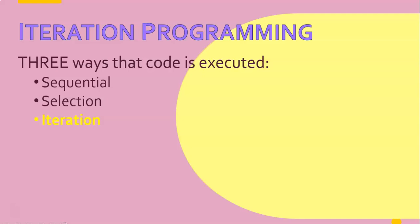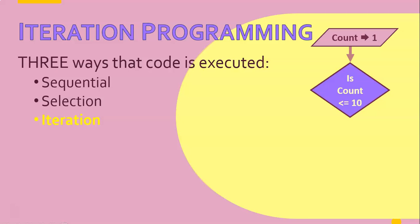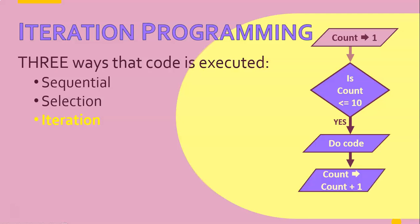Let's look at an example in flowchart format. We've got a counting variable which starts off being a one, and we ask the question: is that count variable at ten yet? When it starts off being one, obviously it's not at ten yet, so what happens is we will then do the code that we want to repeatedly do. Then we will increase that counter by one, so it becomes a two.